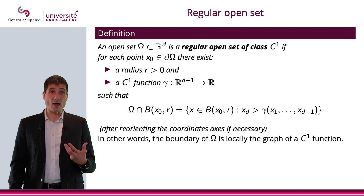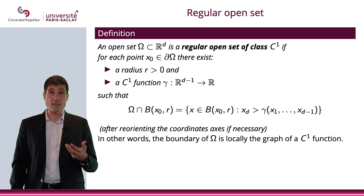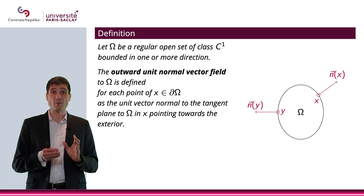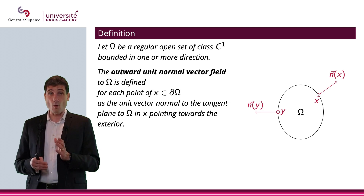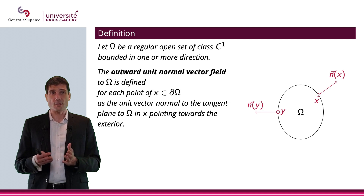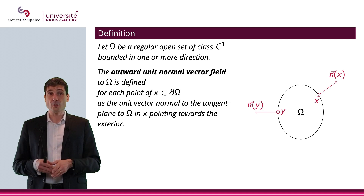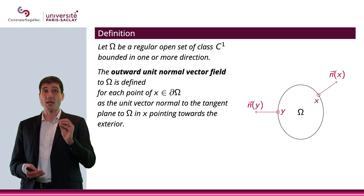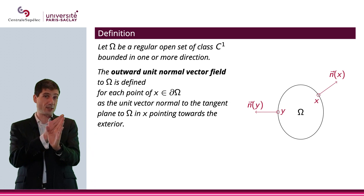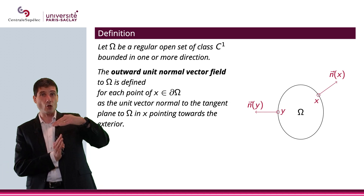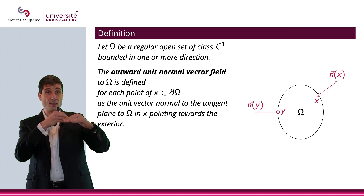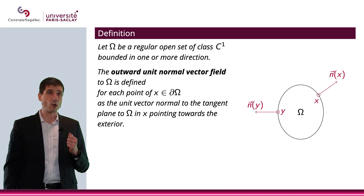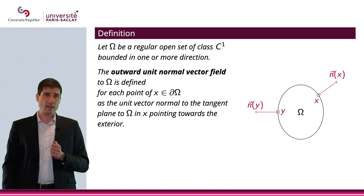In other words, what we're saying is that locally the graph of the boundary is a C^1 function. Now that we have defined this, I can define the outward normal vector field. Let omega be a regular open set of class C^1, bounded in one or more directions. Then the outward normal vector field to omega is defined for each point of the boundary as the unit vector normal to the tangent plane. Since it's C^1 I can compute a tangent, take the normal, and request it to point toward the exterior — that gives the outward unit normal vector field.